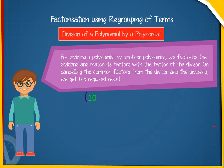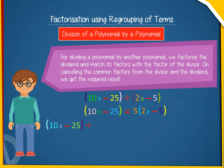Let us divide 10x minus 25 by 2x minus 5. We know that 10x minus 25 equals 5 into 2x minus 5. So, 10x minus 25 divided by 2x minus 5 equals 5 into 2x minus 5 upon 2x minus 5, which equals 5.